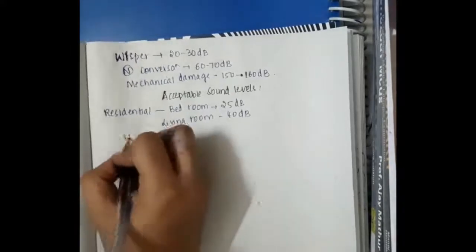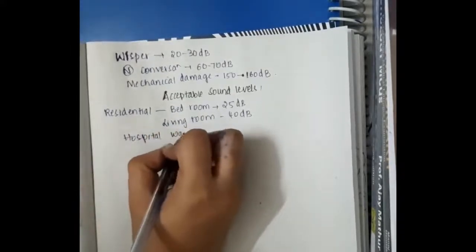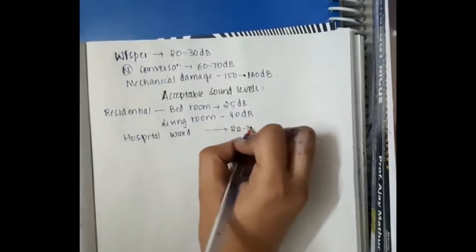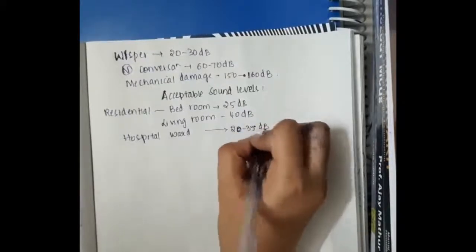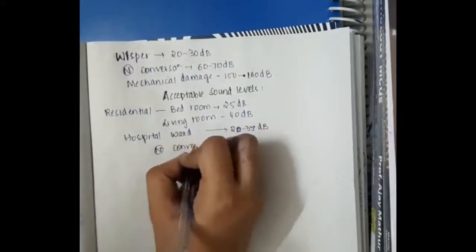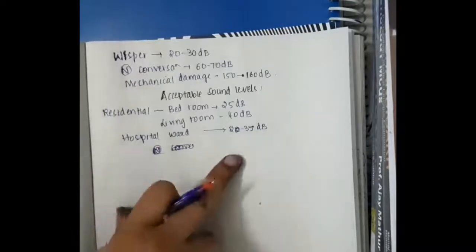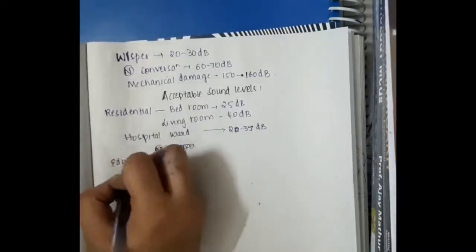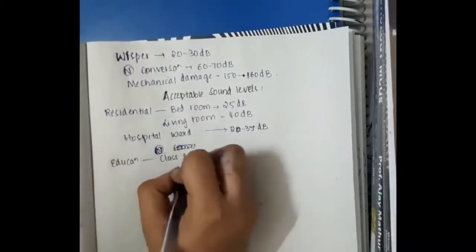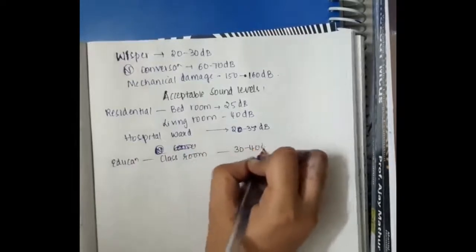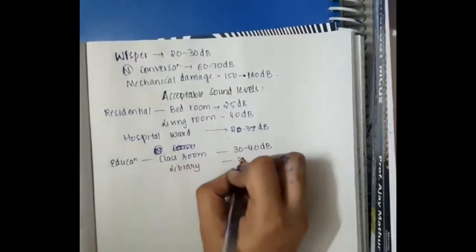Then in hospital wards, 20 to 35 dB is acceptable. In classrooms, in education, 30 to 40 dB is acceptable.